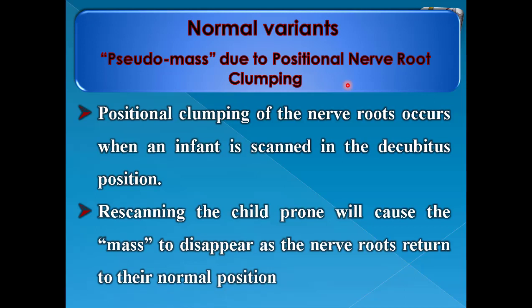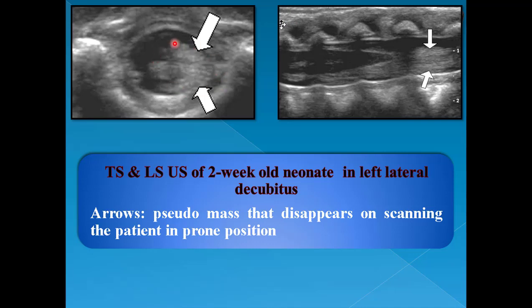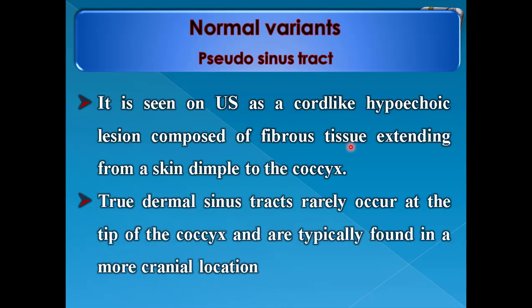Another normal variant is pseudomass due to positional nerve root clumping. Positional clumping of the nerve roots occurs when an infant is scanned in the decubitus position — either right or left lateral. Re-scanning the child in the prone position will cause the mass to disappear as the nerve roots return to their normal position. This can be distinguished from true pathology by changing the patient to the prone position.